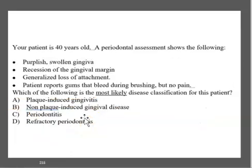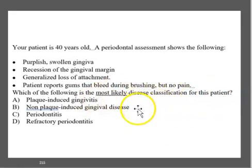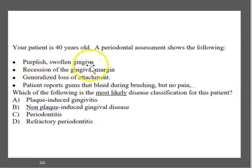One more question. A 40-year-old patient's periodontal assessment shows purplish swollen gingiva, recession of the gingival margin, generalized loss of attachment, and gums that bleed during brushing but no pain. Which is the most likely disease classification — plaque-induced gingivitis, non-plaque-induced gingival disease, periodontitis, or refractory periodontitis? The main things to note are swelling, bleeding, recession, and loss of attachment.